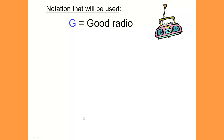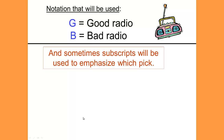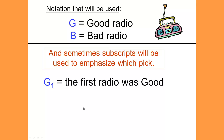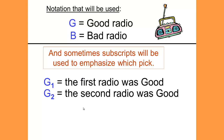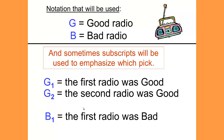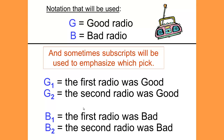The notation we will use: G for good radio, B for bad radio, and sometimes subscripts will be used to emphasize which pick we're talking about. G sub 1 is the first radio, G sub 2 is the second radio, B sub 1 means the first radio picked was bad, and B sub 2 means the second radio was bad.